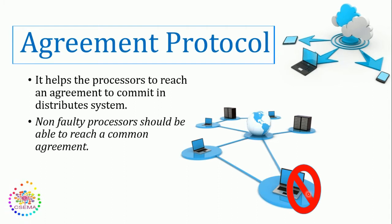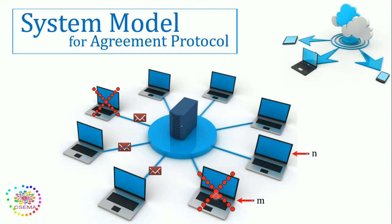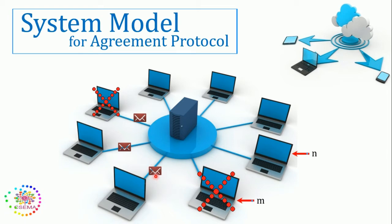All the non-faulty systems must provide a single value like other non-faulty systems. So here we have the system model for the agreement protocol. In the system model, we define that all the systems in the distributed environment — faulty processors are M and non-faulty processors are N. All these processors must communicate by passing messages to one another and agree on a single value. By using these common values, the systems' data managers can decide whether to commit or abort the transactions.